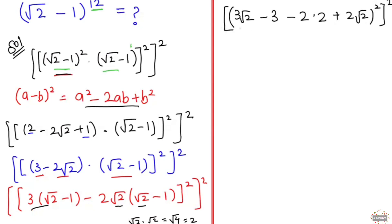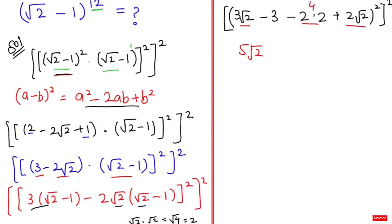Now I'm going to simplify further. Here 3√2 and 2√2 combine to give 5√2, and -3 and -(-2) gives -3 + 2, with the minus-minus becoming plus. So this equals 5√2 - 7.